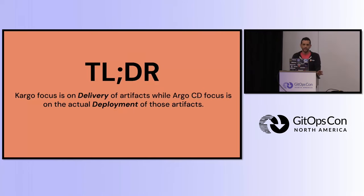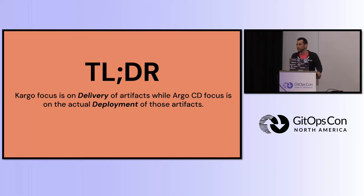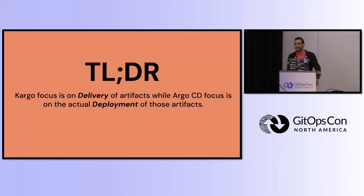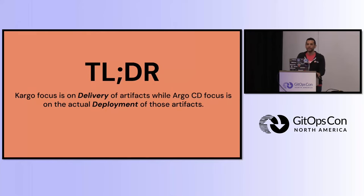The TLDR: Kargo focuses on the delivery of artifacts while Argo CD — or your GitOps tools, since there are Flux people here — focuses on the deployment of those artifacts. Argo CD focuses on the actual deployment; it doesn't really know about how it got delivered. That's where Kargo fits in.